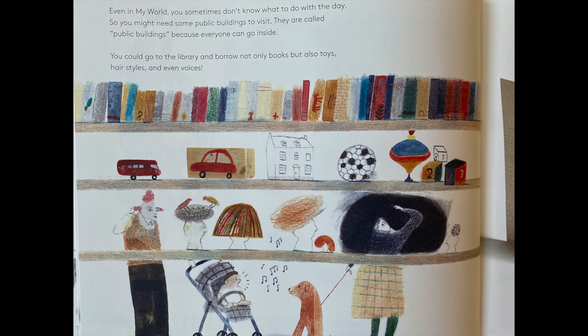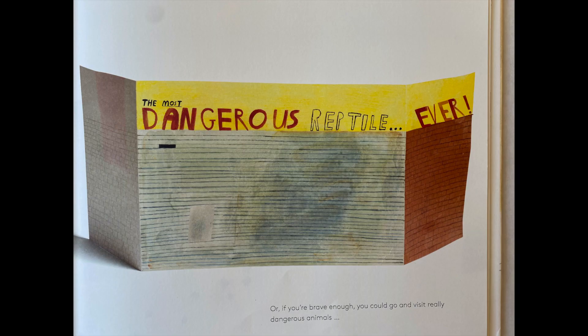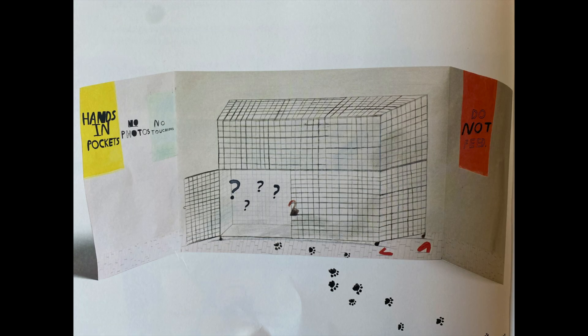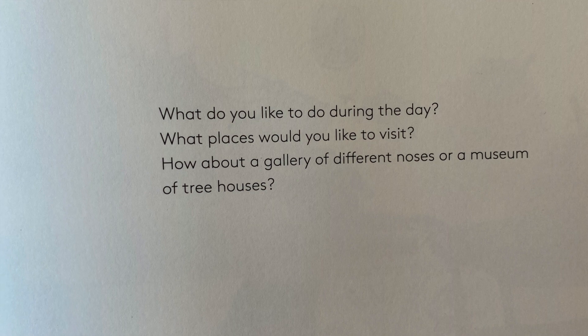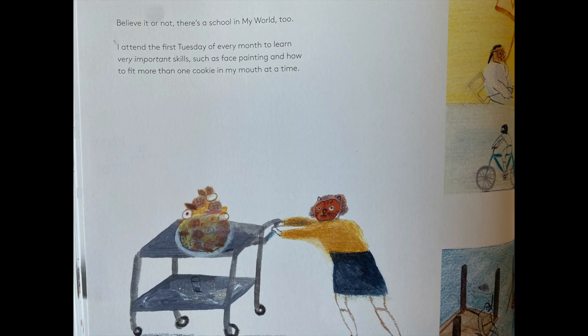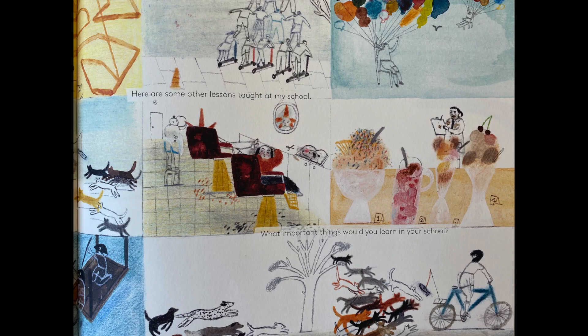Even in my world, you sometimes don't know what to do with the day, so you might need some public buildings to visit. They are called public buildings because everyone can go inside. You could go to the library and borrow not only books, but also toys, hairstyles, and even voices. Or if you're brave enough, you could go visit really dangerous animals — the most dangerous reptile ever. What do you like to do during the day? What places would you like to visit? How about a gallery of different noses or a museum of tree houses? Believe it or not, there's a school in my world too. I attend the first Tuesday of every month to learn very important skills such as face painting and how to fit more than one cookie in my mouth at a time. Here are some other lessons taught at my school. What important things would you learn in your school?